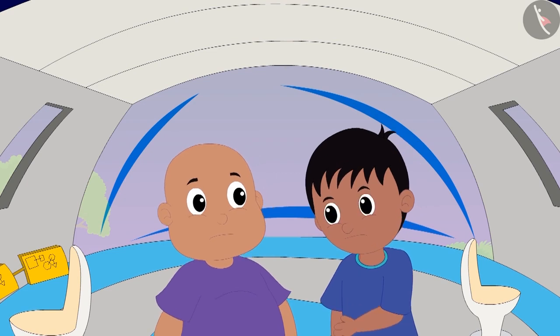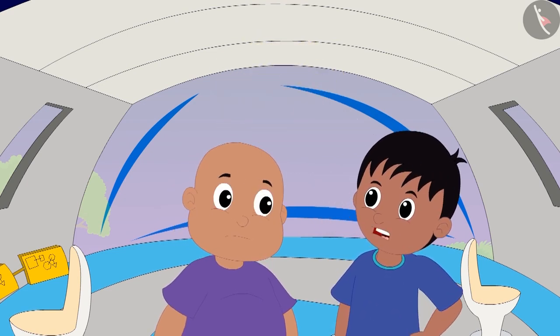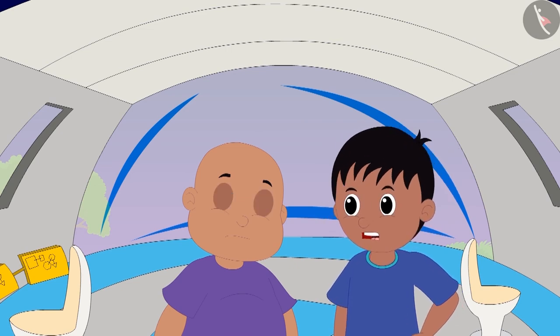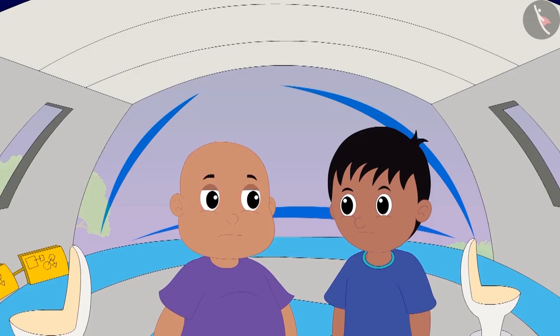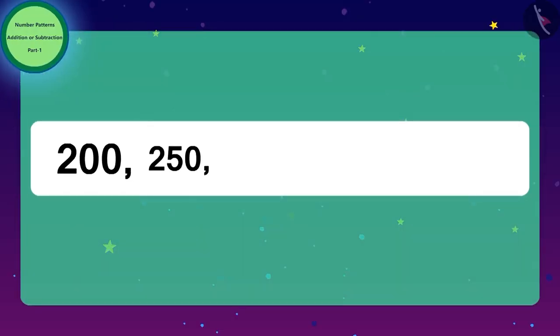Raju and Bablu saw a door in front of them on which the code was written. Raju told Bablu that he had solved Jeev's codes before, but these numbers were very large. Bablu told Raju that they should look at the numbers in order.